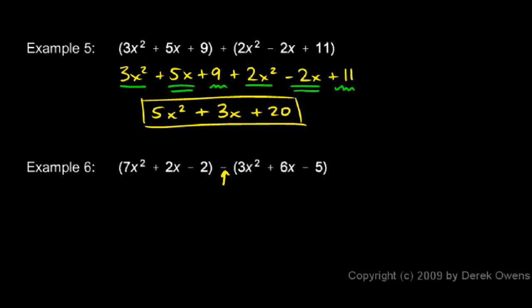So when you subtract this polynomial, remember that each term is going to get subtracted. We have this first polynomial. Let's write that down: 7x² + 2x - 2, and then we're subtracting all of these.